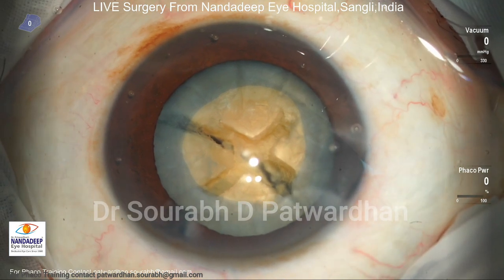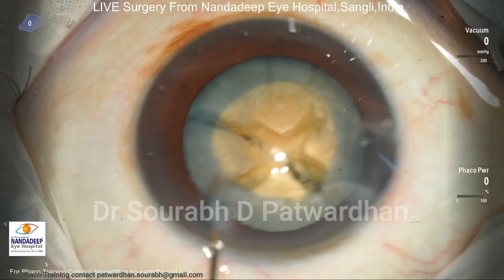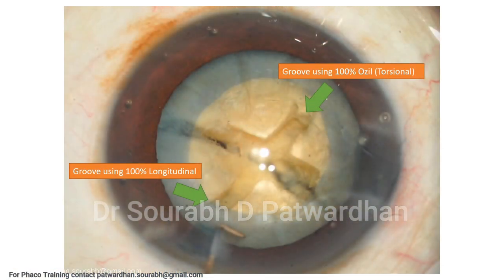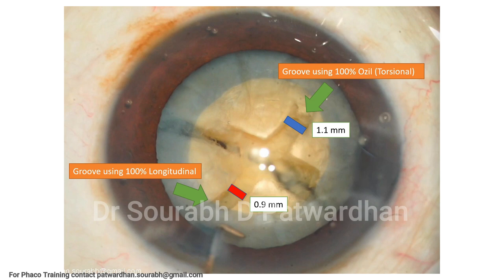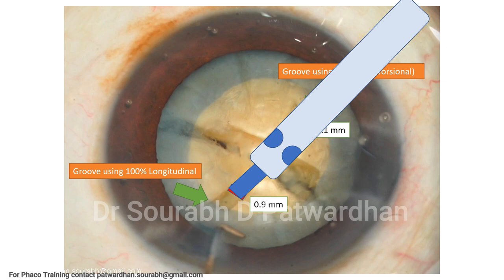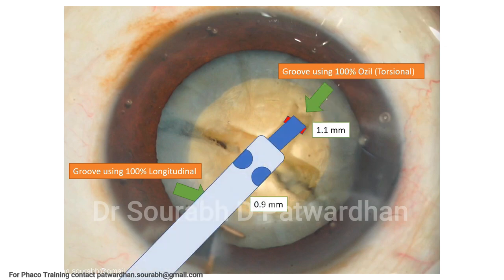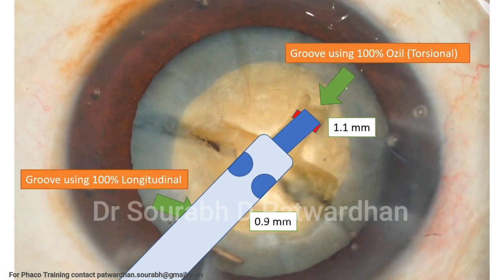After completing the trenches on both sides, I measured the groove on both sides using a 1.25 millimeter Sinski hook to compare sizes. When I compared the groove made using 100% longitudinal FACO power, it was just 0.9 millimeter — similar to the size of the FACO tip. With 100% torsional (OZL), it was wider, around 1.1 millimeter, using the same 0.9 millimeter FACO tip. When doing the chop in the groove made by longitudinal, the tip fits very snugly, and that's why the hold over the nucleus is better.